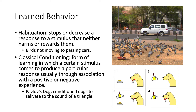Classical conditioning is an important one in psychology. It's a form of learning in which a certain stimulus comes to produce a particular response, usually through association with a positive or negative experience. Pavlov's dog is a classic example. Dogs have an innate behavior to salivate at food. Then as you train the dogs, they understand: you ring the bell, they're going to get fed. Eventually you ring the bell and they salivate. They learn that the bell means food, so they start to salivate before the food arrives. That is classical conditioning.